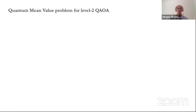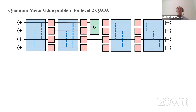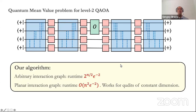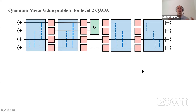This gives a classical algorithm for computing quantum mean values for level-one QAOA, meaning there is no hope for quantum advantage at level one. Perhaps we should look at higher levels of QAOA. In the rest of the talk I will describe what happens for level two. We want to compute the mean value of some two-qubit observable on a level-two variational state. We assume the cost function is defined on some interaction graph, meaning we can only apply two-qubit gates on nearest-neighbor vertices on the interaction graph.